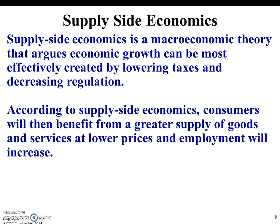Supply-side economics is a theory that says economic growth can be created by lowering taxes and decreasing regulation. According to supply-side economics, consumers will benefit from a greater supply of goods and services, which will be lower priced, and employment will increase. Two examples in recent history are President Reagan — referred to as Reaganomics — and Donald Trump, who cut corporate and income taxes and has been a big champion of deregulation. When President Reagan instituted this, it did help pull the economy out of a recession, but it also added to our national debt. It remains to be seen what will happen with Trump's policy.